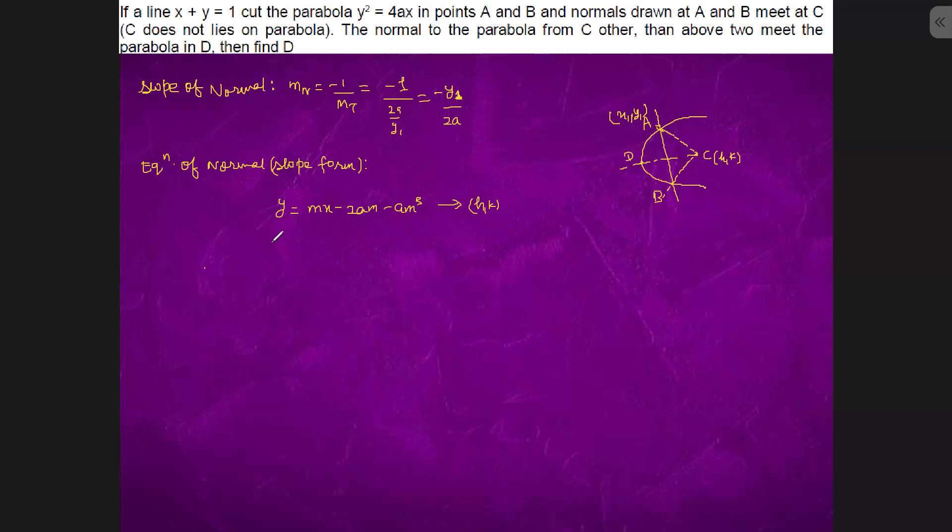So we have what? We will have k = mh. We substitute m with minus y1 by 2a. We will substitute m with minus y1 by 2a. This is k. This is 2a. This is plus 2a y1 by 2a. This is plus a y1 cube upon 8a³.